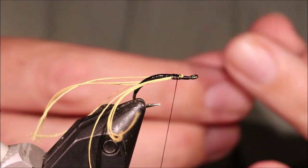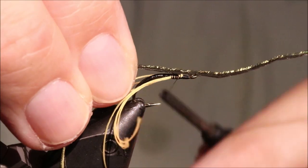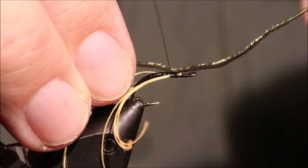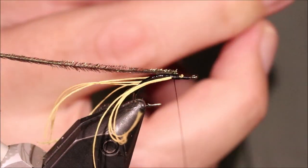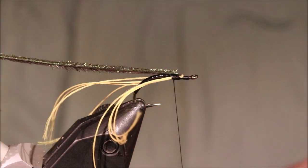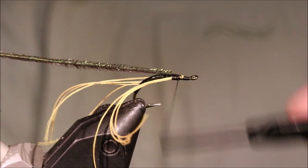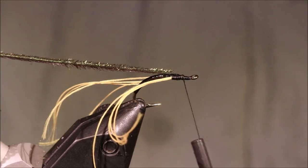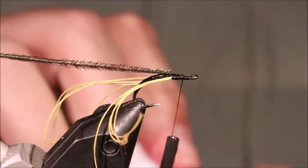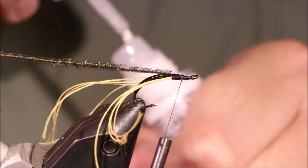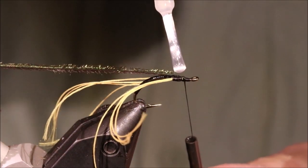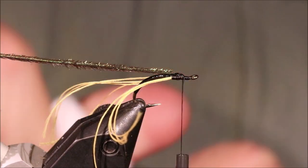And then I'll get a single peacock herl, tie it in. I'll just break away that weak tip there. If you want to, you don't need to do this but it helps, a wee touch of super glue.